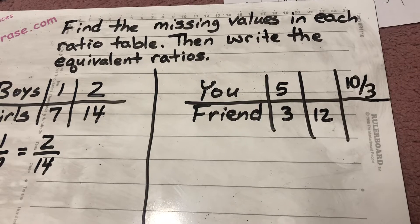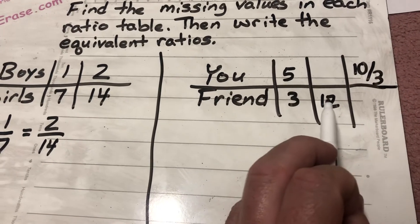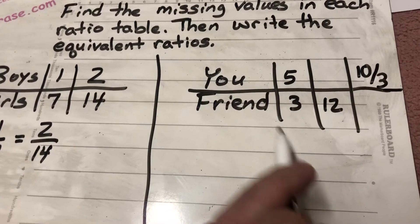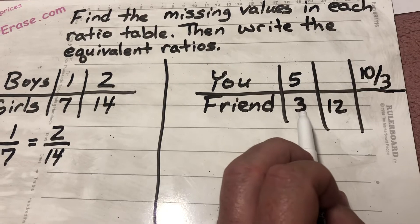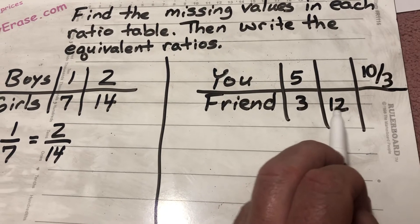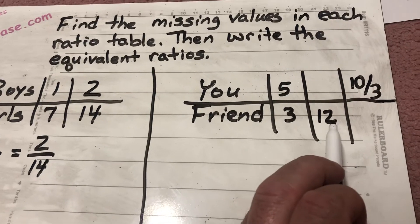So that's interesting. So for every 5 that you had, your friend had 3. Now here your friend had 12. So this one's pretty straightforward. Once again, I can ask myself, well, what did I do to 3 to get 12? Well, I should realize that I did 3 times 4 to get 12.